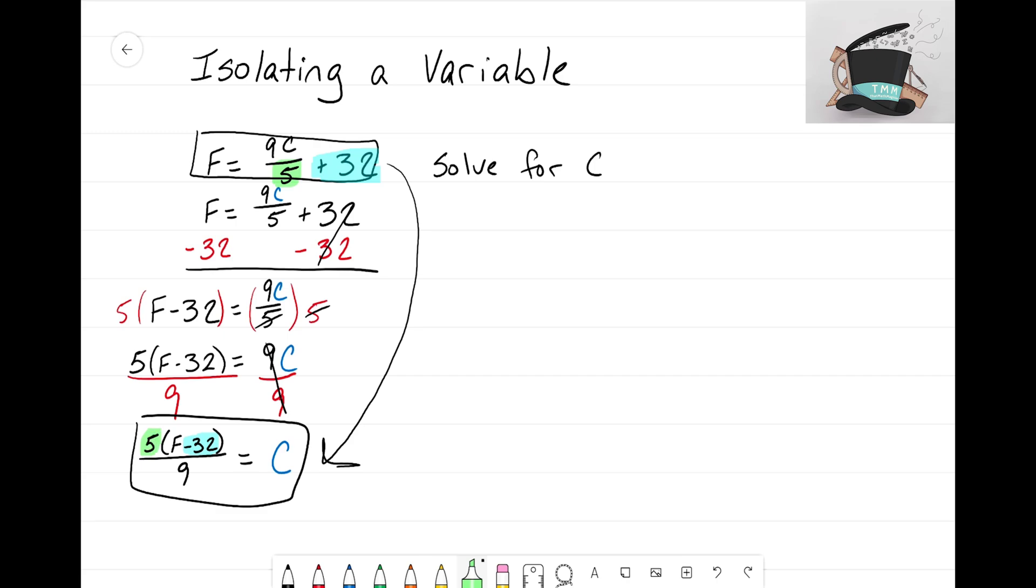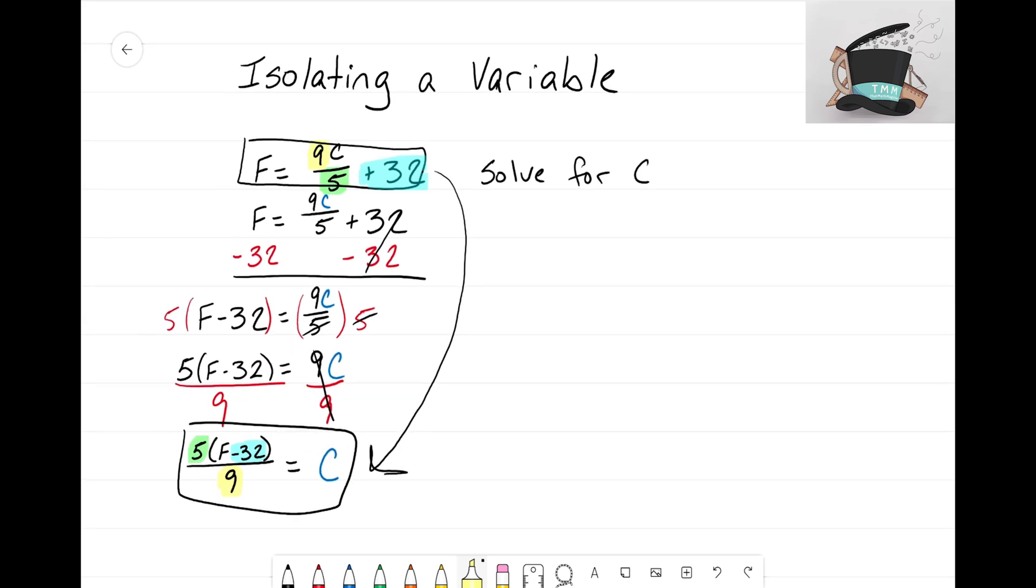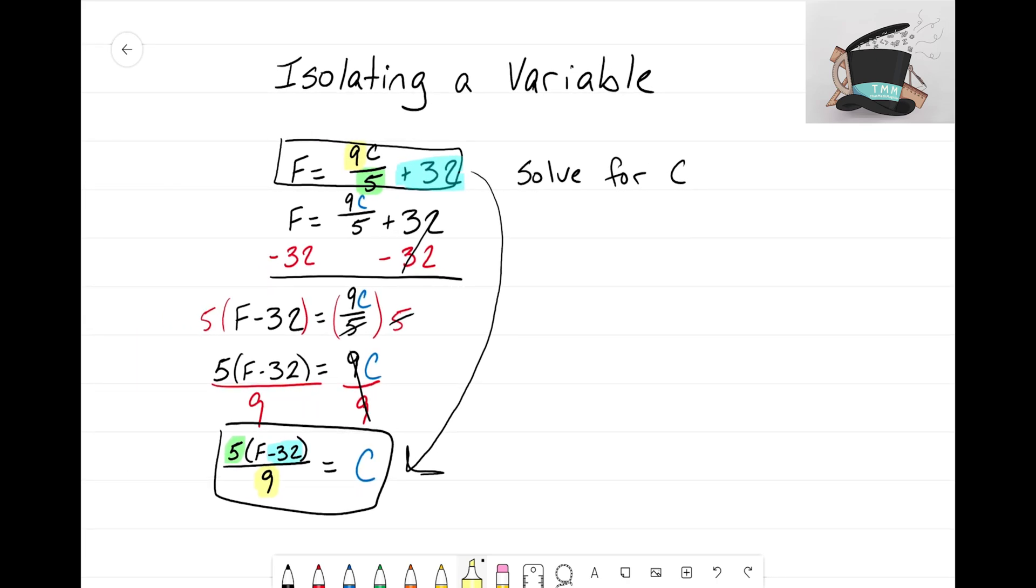You see how it's kind of flipped now on top of that fraction. And I hope that you can now point out that since the 9 was being multiplied, it's now being divided down here. All of those terms have kind of changed and done the inverse. So as you work through these problems, you'll start to see that these inverse properties will pop up.